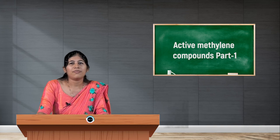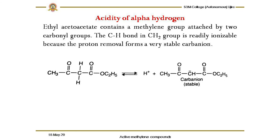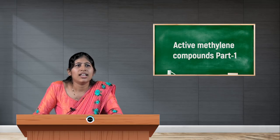Next we will see the acidity of alpha hydrogen. The CH2 group bonded to the electron withdrawing group — the alpha carbon protons — are acidic. In ethyl acetoacetate, the methylene group is attached to two carbonyl groups. The CH bond in the CH2 group is readily ionizable; removal of a proton forms a very stable carbanion. These two are the alpha protons, and removal of one of these protons gives a highly stable carbanion.